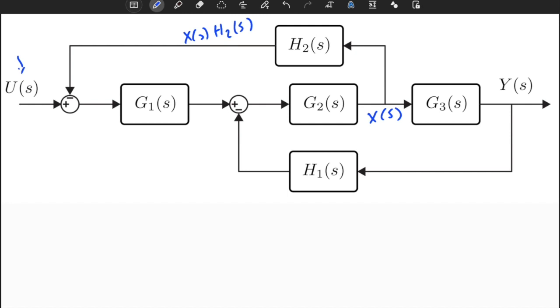So if I cut this line, of course I don't have now x of s times H2 of s because I have nothing at the input. Instead I will obtain a feedback from the output. Now this is y of s times H2 of s, which is not equal to x of s times H2 of s, right, because I have G2 of s here.